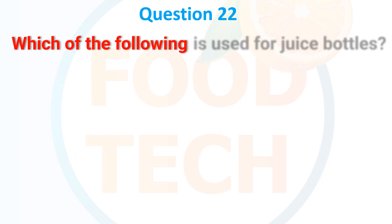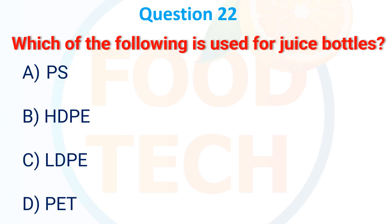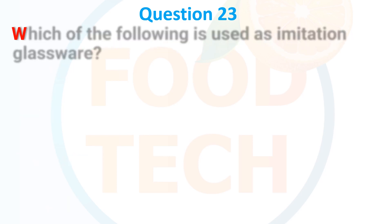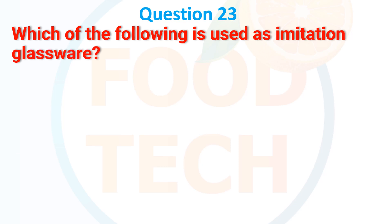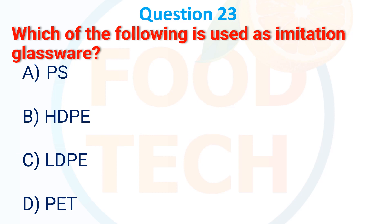Which of the following is used for juice bottles? A) PS, B) HDPE, C) LDP, D) PET. The answer is B) PET. Which of the following is used as imitation glassware? A) PS, B) HDPE, C) LDP, D) PP. The answer is A) PS.